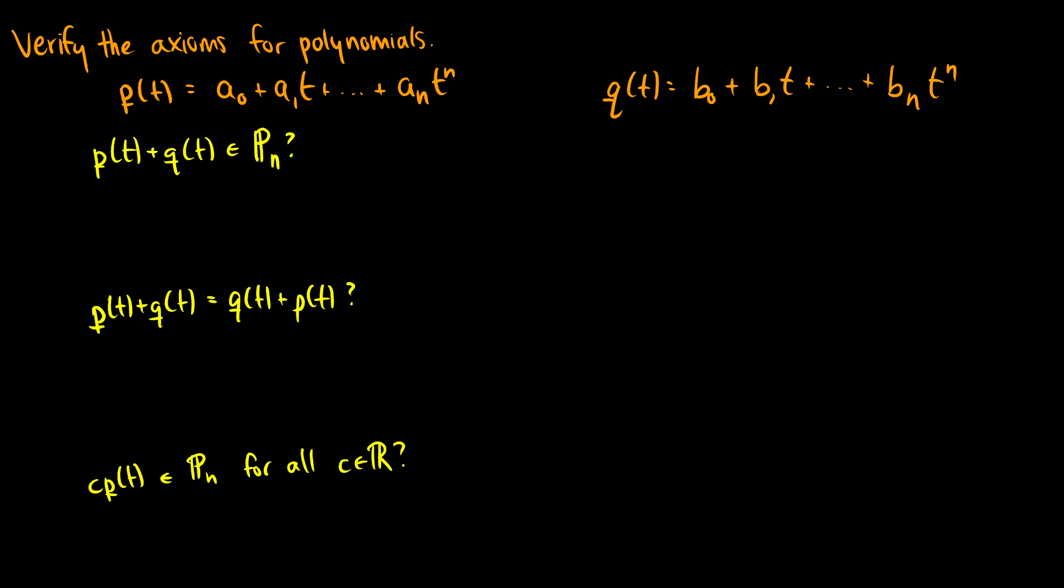First of all, if two vectors or two polynomials are in the space independently, then their sum has to be in the space as well. So I listed p and q, and we can add these together. So for instance,